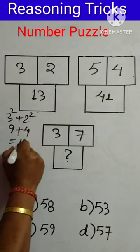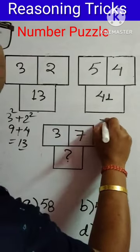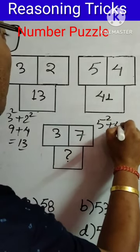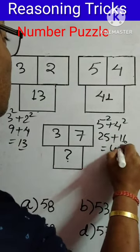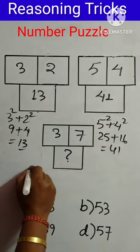Let's verify with the second figure: 5 squared plus 4 squared. 5 squared is 25 and 4 squared is 16, which equals 41. This confirms our pattern, so we'll implement the same approach for the third figure.